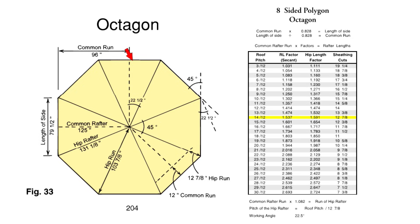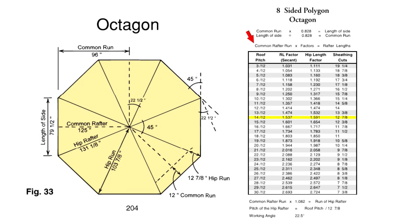Just like a circle, every polygon has 360 degrees total all the way around it. So to get the angle of any particular side, we simply take the 360 degrees and divide it by the number of sides. This is an octagon, so it has eight sides — 360 divided by eight gives you 45 degrees on each corner. Now half of that is going to be the working angle, 22 and a half degrees. The two most important elements when working with an octagon are the common rafter run, from the outside to the center, and the length of side. The common rafter run times 0.828 equals the length of the side, and inversely, if we already have the length of side, we divide by 0.828 to get our common rafter run.